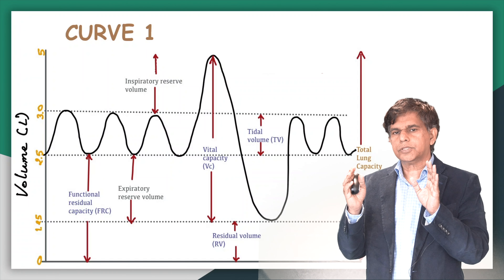When it comes to COPD, focus on three main things: residual volume — that's going to increase; forced vital capacity — that can decrease or sometimes remain normal; and total lung capacity — that will increase because the residual volume is increased.